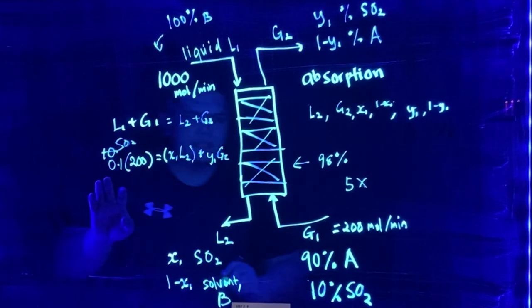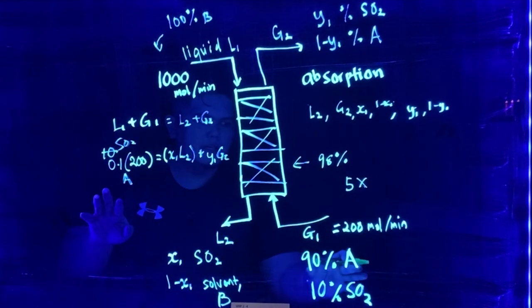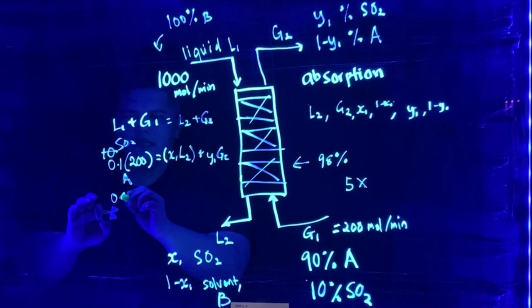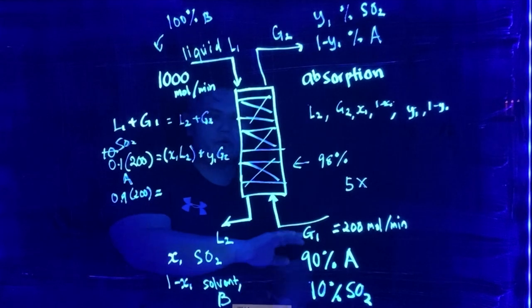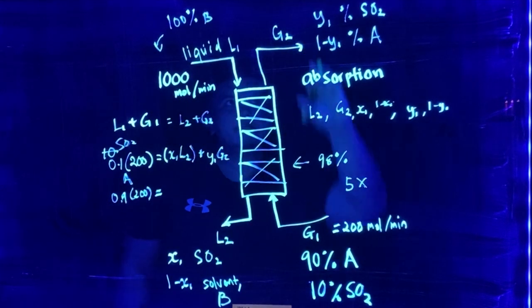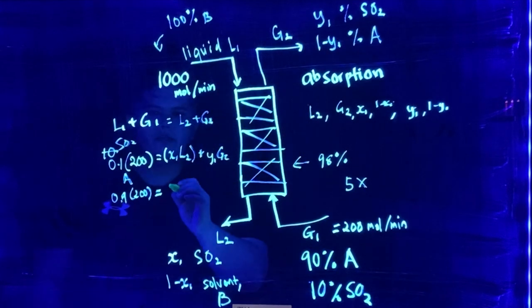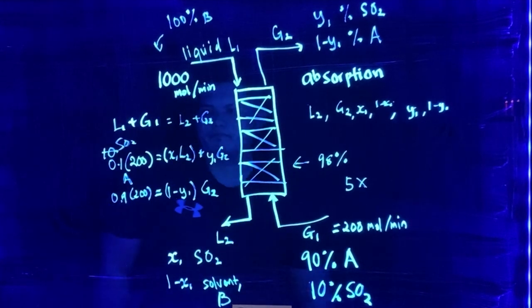How about for the gas A? So we have here 0.9 multiply with 200 which is equals to, there is no gas A other than going out to this gas outlet, which is equals to 1 minus Y1 G2.